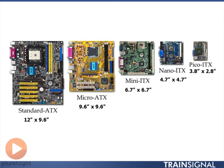After the ATX series, we really needed to find a way to get smaller and smaller. So we moved into the ITX series. First was the Mini-ITX, which is the largest of the ITX series at 6.7 by 6.7 inches. Then we moved down to the Nano-ITX at 4.7 by 4.7 inches, and all the way down to the Pico-ITX at just 3.8 by 2.8 inches.